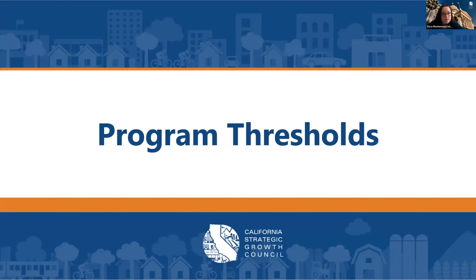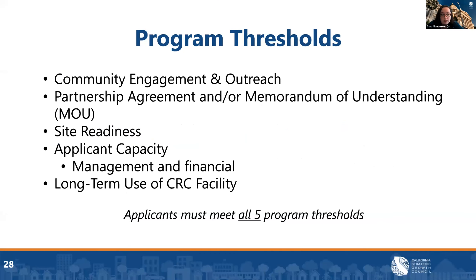This next section outlines the five threshold requirements for the CRC project development grants: community engagement and outreach; partnership agreements and memorandum of understanding; site readiness; applicant capacity — both management and financial; and long-term use of the CRC facilities. Upon submission of a full application, each application must meet all thresholds to advance from the program thresholds screen to the interagency review panel.